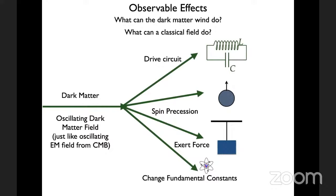Question: if dark matter changes fundamental constants, can you distinguish that from Lorentz invariance violation? Yes — because this signal will oscillate at a specific frequency, say a megahertz. Why should a violation of special relativity change back and forth at a megahertz? The fact that the signal is time-dependent is extremely important, not just from that fundamental point of view, but also in terms of distinguishing it from regular noise — all kinds of things happening at various frequencies in the world.